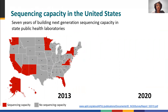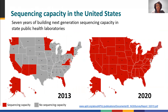U.S. public health laboratories and territories have made significant strides in developing capacity for pathogen genome sequencing. As you can see on the map, the number of states that have sequencing capacity in red increased between 2013 and 2020. However, even in the best-resourced jurisdictions, sequencing is constrained by cost — not only in materials, but in staff time required to generate and analyze sequencing data.